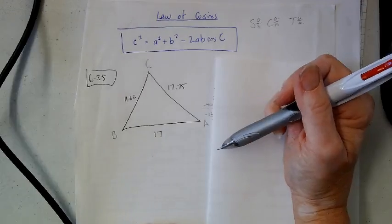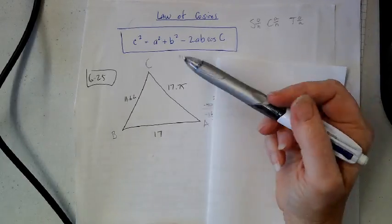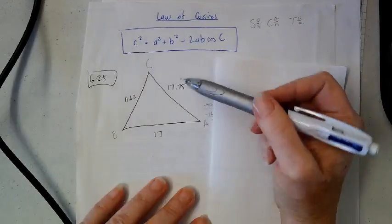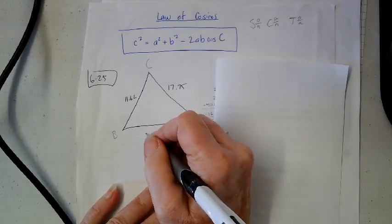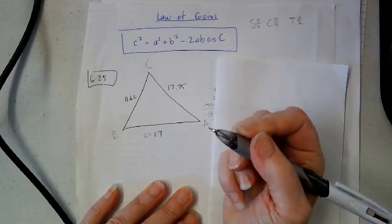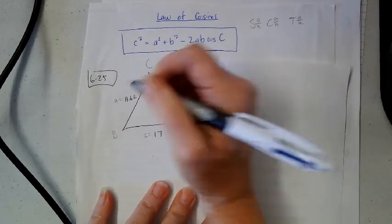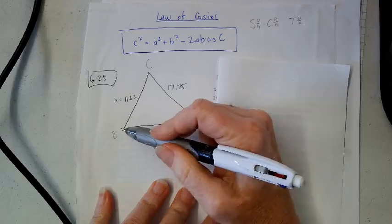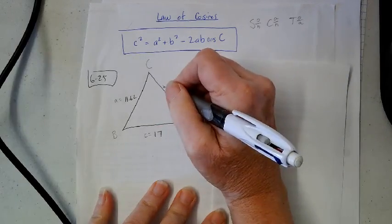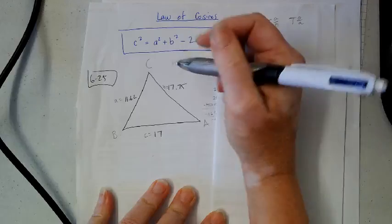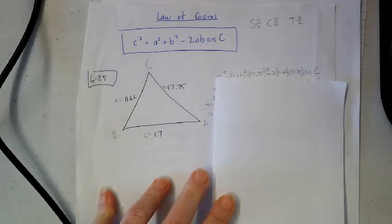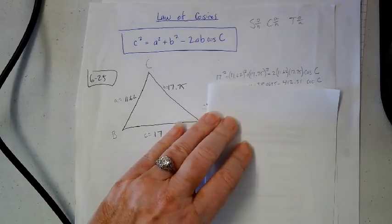I'm just going to fill in my numbers. Remember, the side across from an angle is named with a lowercase letter. So that's little c. This is across from a, so that's little a. And if it's across from angle B, it's little B or lowercase B. Then I start plugging the numbers into this formula.